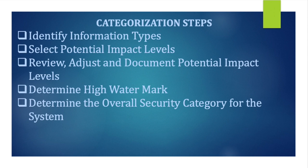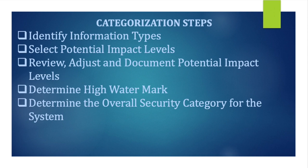Step two is selecting potential impact levels, which could be high, moderate, or low, and you assign these to the security objectives. Step three is to review, adjust, and document the potential impact levels you have recommended. Step four is to determine your high water mark, which means the highest impact value. Step five is to determine the overall security category for the system — whether it is a high, moderate, or low impact system.